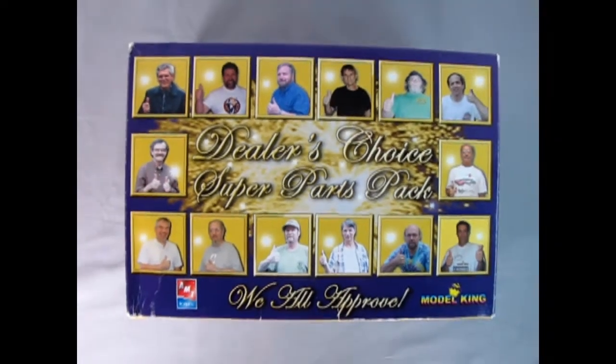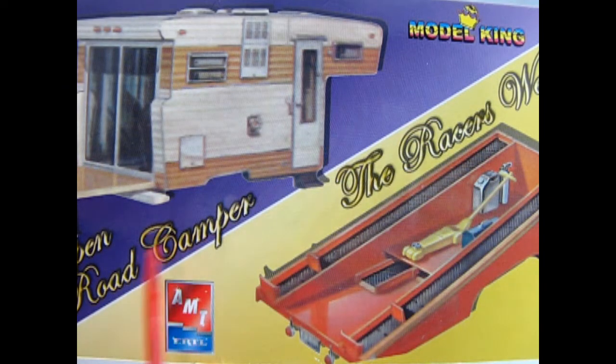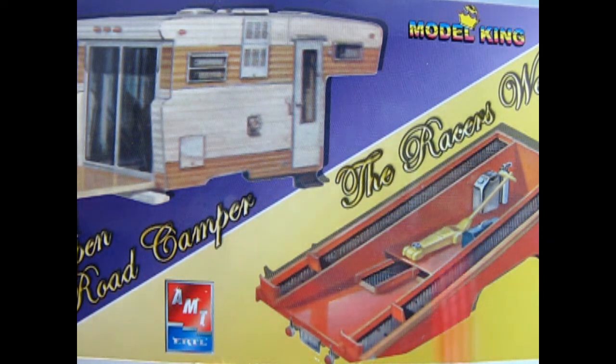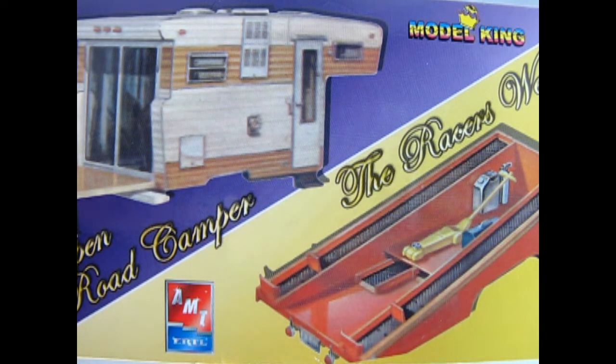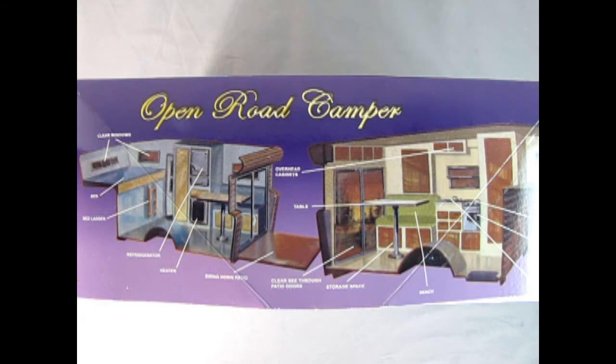Now today we're taking a little bit of a departure in our 1970s model kit tour with this really interesting Model King's dealer's choice super parts pack. I know this image actually reminds me of the Brady Bunch opening scene. So what's inside this thing? According to the end of the box we actually have the open road camper, which was another great 70s add-on kit, and the racer's wedge. Recently AMT has released the racer's wedge. However this model kit from the Model King came out by RC2 in 2004.